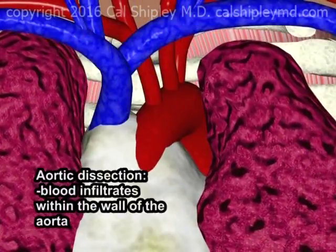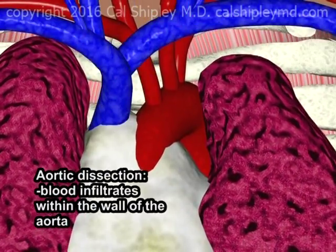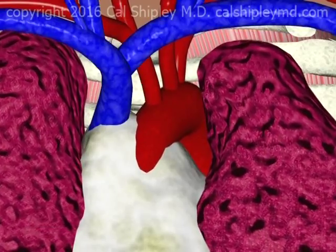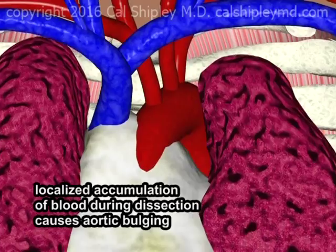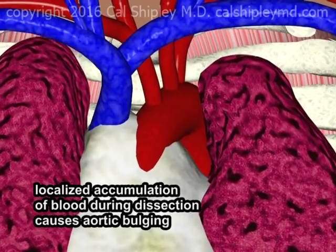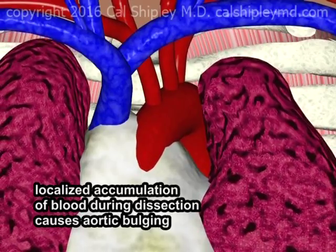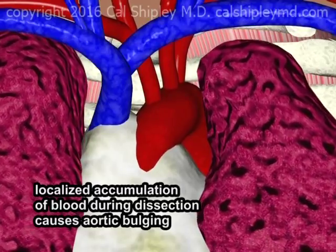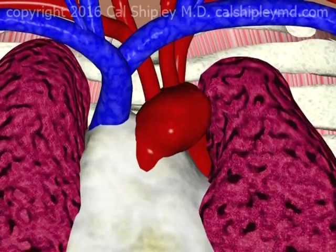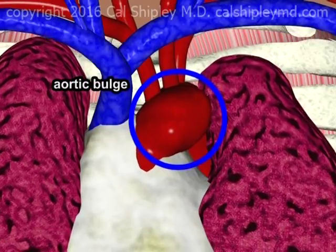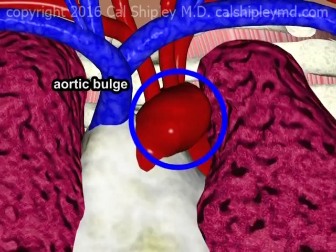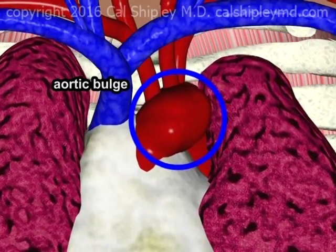During the process of aortic dissection, blood infiltrates between the layers of the aortic wall. Localized accumulations of blood may cause bulging and stretching of the aortic wall. This stretching may result in weakening of the wall structure, and ultimately, rupture.